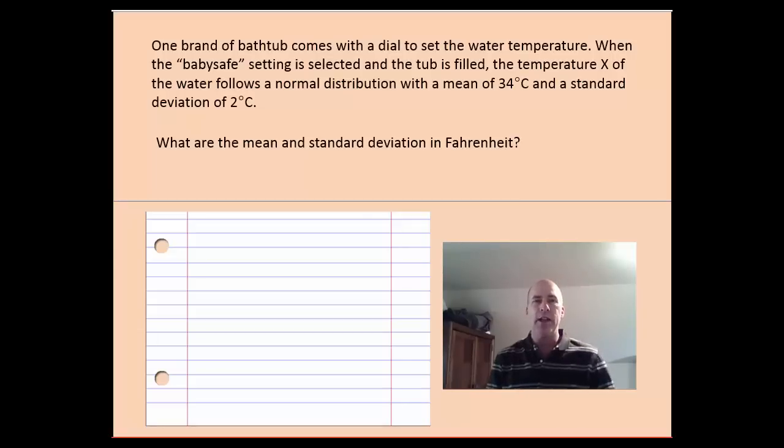First of all, we're given the distribution here. X, the temperature of the water, follows a normal distribution. We have the mean and the standard deviation. One other piece of information we might need is that formula for converting Celsius to Fahrenheit. And this is a formula that you might remember from science class, where you take the temperature in Celsius, you add 32, and then you multiply by 9 fifths.